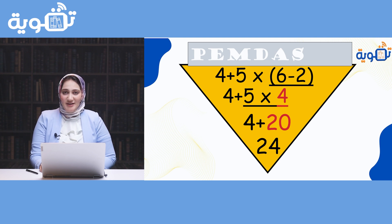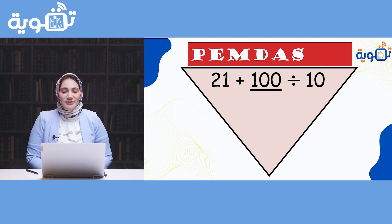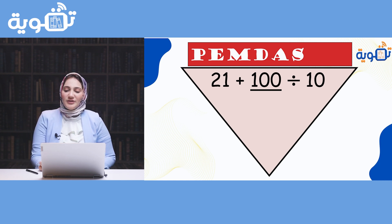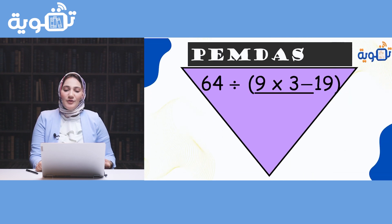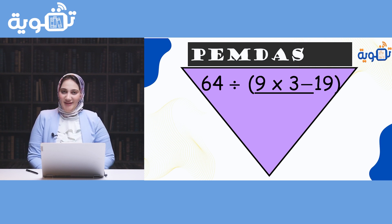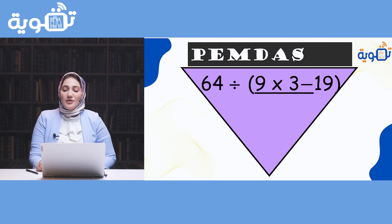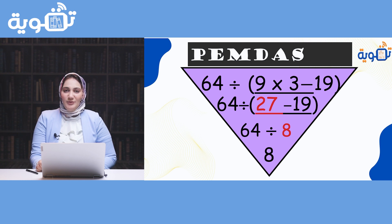Did you get the correct answer? If you did, please put one mark. Next question: 64 ÷ (9 × 3 - 19). We have two operations inside the bracket — multiplication and subtraction. According to the order, multiplication comes first: 9 times 3 equals 27. Then 27 minus 19 equals 8. So we now have 64 divided by 8, which equals 8.